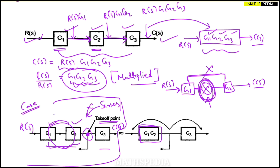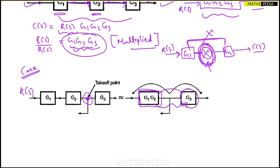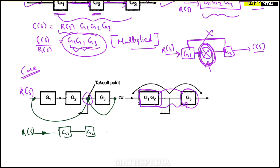To resolve this, you need to shift the take-off point — either before G1 (to the left) or after G3 (to the right). If we shift the take-off point before G1, the diagram becomes: take-off point, then G1, then G2, then G3. Now these three blocks are directly connected and in series.